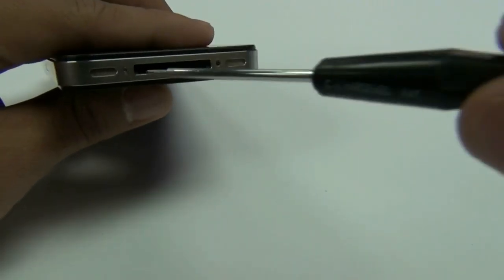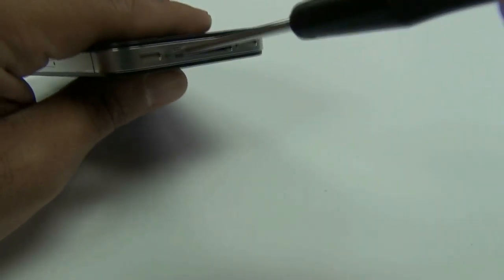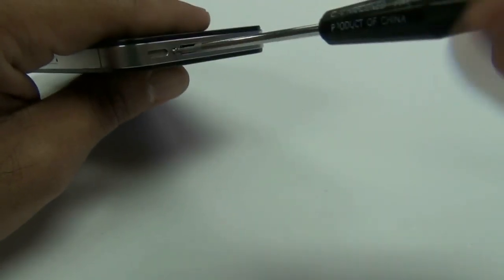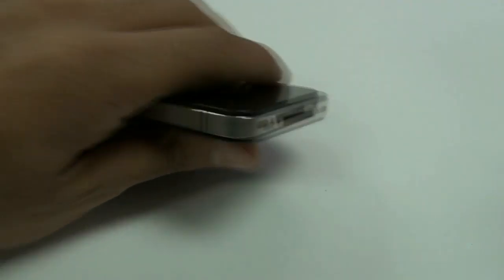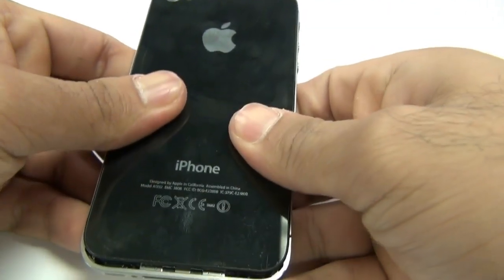Please note, older iPhone 4s used Phillips screws on the bottom and the newer iPhone 4s all used the Pentalobe 5 star screwdriver. Once you remove the two screws, slide the back cover up and it will pop right off.